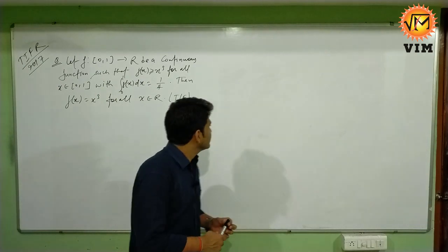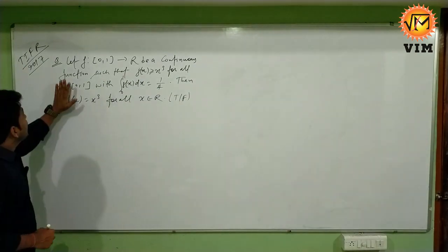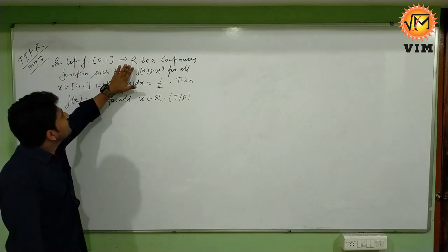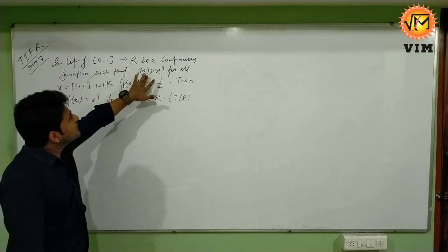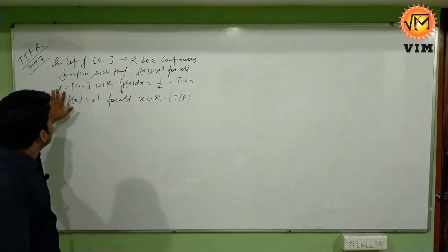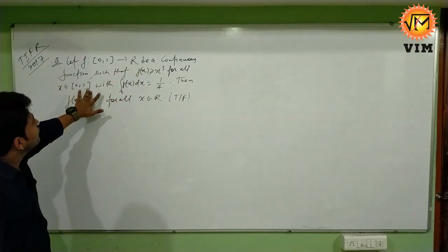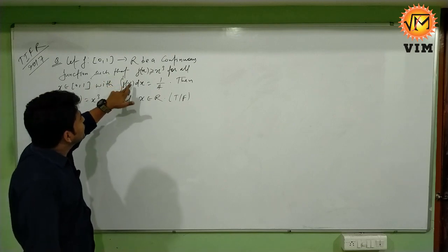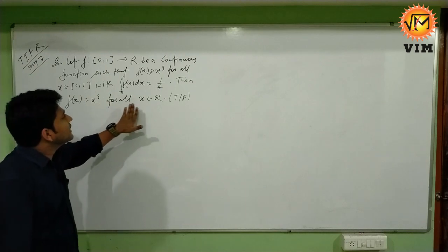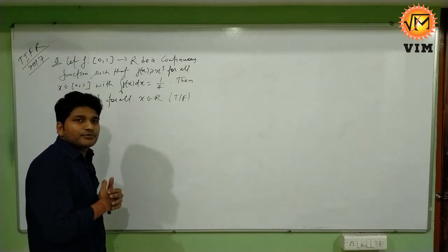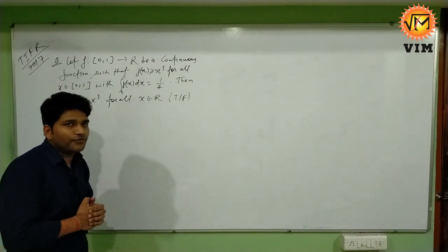Let's see the question. The question says that let f be a function defined from closed interval [0,1] to R, a continuous function such that f(x) ≥ x³ for all x ∈ [0,1], with integration from 0 to 1 equal to 1/4. Then f(x) equals x³ for all x ∈ R, and we have to check whether it is true or false.